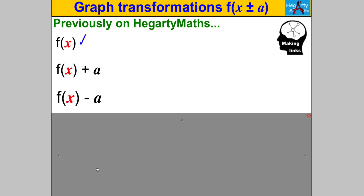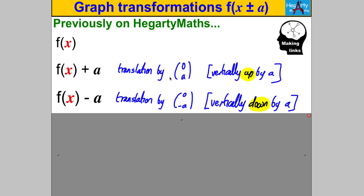Do you remember what the transformations were on the original function? Pause the video and have a think. You should remember that f(x)+a was a translation by (0, a), meaning the whole function moved vertically up by a units if a is positive. And f(x)-a was a translation by (0, -a), so the whole graph moved vertically down by a units.